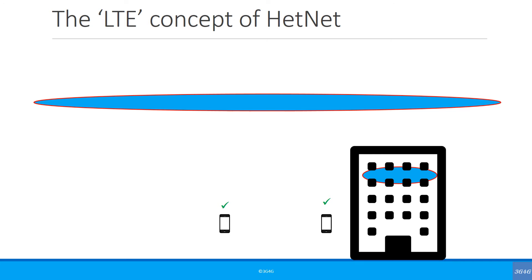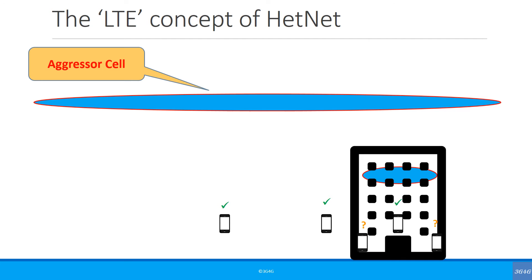Now what if I change the scenario and put this small cell inside a building — a shopping mall or enterprise? A UE in the center of the building can listen to the small cell just fine. The real challenge comes for UEs near a window or door: they receive signal from the small cell and also from the macro cell. Because both are using the same frequency, they may not be able to listen well to either. To solve this, there has to be a mechanism to manage interference. Here, the macro cell is called the aggressor cell and the small cell is called the victim cell.